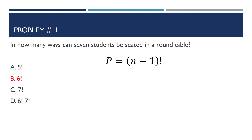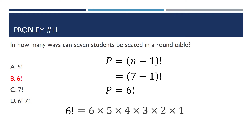Let's substitute N by 7 because there are 7 students. So 7 minus 1 is 6, giving us 6 factorial. What does 6 factorial mean? 6 factorial is 6 times 5 times 4 times 3 times 2 times 1. If you get the product, you get 720 ways to arrange the 7 students at a round table. But in the choices, it's in factorial notation, so the answer is 6 factorial.